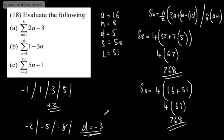So there we go — sigma notation. We read it as the sum from n equals 1 to n equals 8 of (2n minus 3). All we do is revert back to either one of these formulas, which we've seen before, and calculate the sum. Thank you.